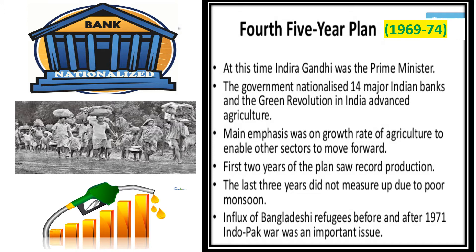You may recollect what we learned in the previous chapter about the Green Revolution. In India, advanced seeds and advanced farming methods were introduced, which was called the Green Revolution. This brought about a bumper crop — that is, excessive production of food grains. The main emphasis was on the growth rate of agriculture to enable other sectors to move forward. The first two years of the plan saw record production, showing the Green Revolution was successful. The last three years did not measure up due to poor monsoon.